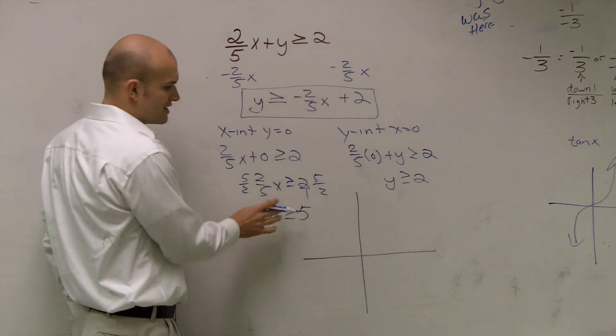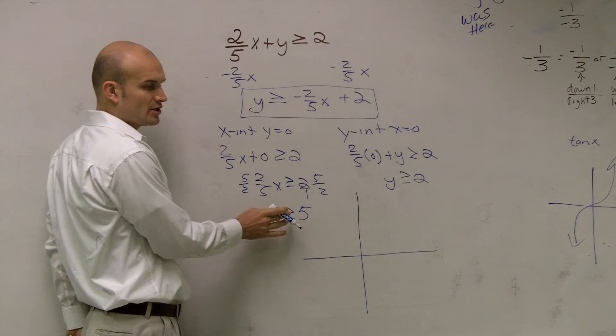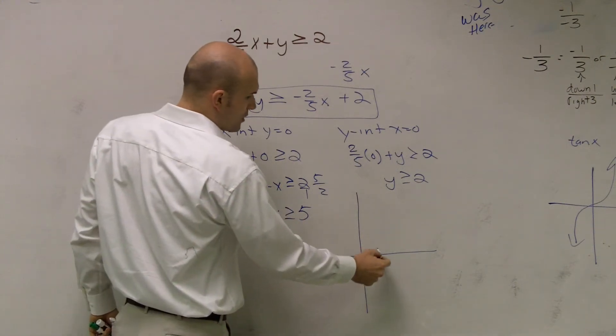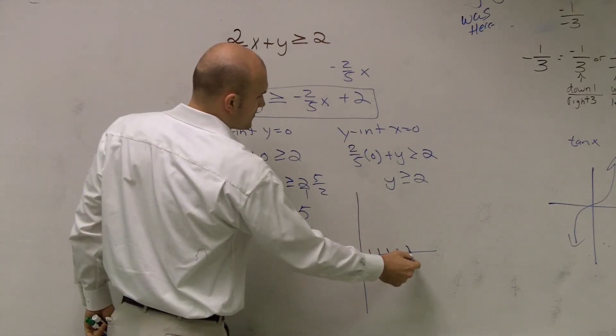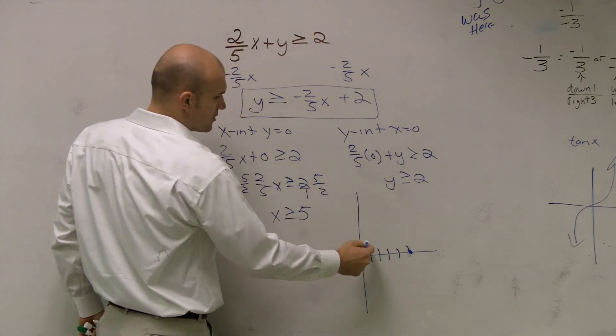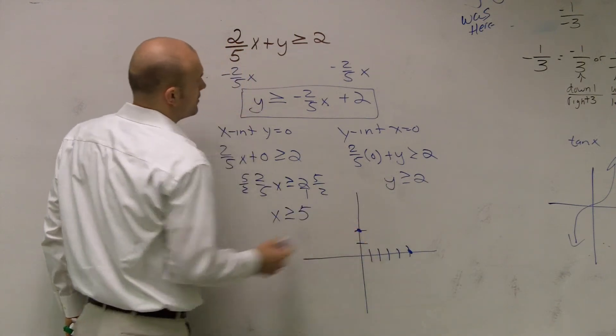So I go over to, I just treat these, remember, just treat these just like they're your intercepts. So x is 5, positive 5, 1, 2, 3, 4, 5. And y is 2, 1, 2. OK?